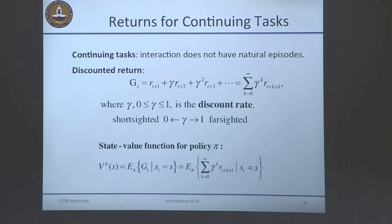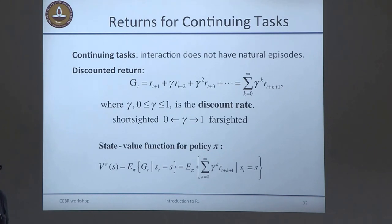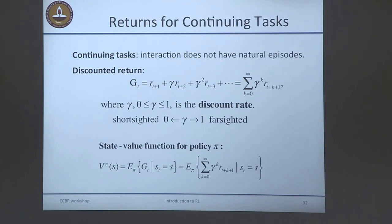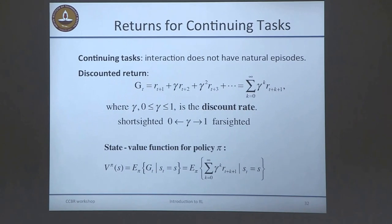What if the interaction has no natural episodes, like riding a cycle where you just want to stay balanced indefinitely? In such cases, we use discounted return, where future rewards decay exponentially so the sum stays bounded even over infinite time steps. When gamma approaches zero, you only worry about the immediate reward — like a three-year-old playing chess who just takes a piece now without caring about consequences three steps later. When gamma approaches one, you become far-sighted, considering long-term consequences of actions.